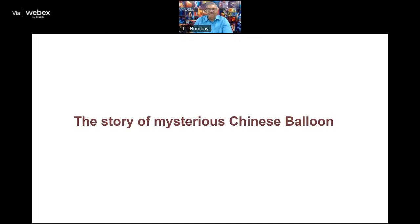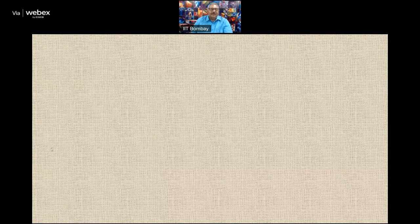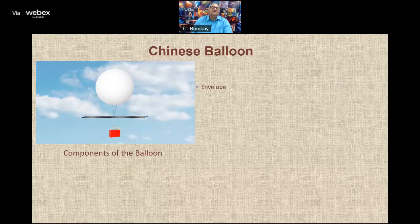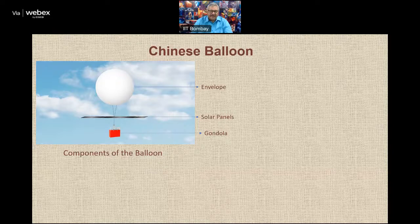Let us now look at the story of the mischievous Chinese balloon. The balloon was seen to consist of three major components: the envelope, which is the bag housing the LTA gas; the solar panels, which provide power to the system; and the payload or gondola, which contains safety devices and payload-carrying material. These are all my own views based on literature I have obtained — I do not claim to know the exact story, so please pardon me if something proves to be wrong.